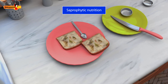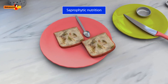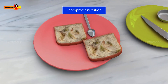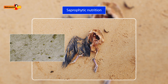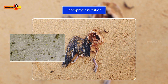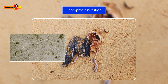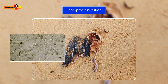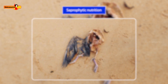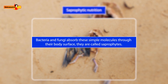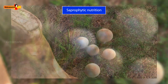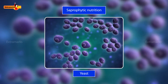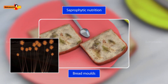Let us now discuss saprophytic nutrition. Sometimes we observe that something of black or blue color is present on bread. This is a type of fungi. Some bacteria and fungi depend on dead organisms to obtain nutrients. They decompose and degrade complex molecules present in these organisms to simple molecules, and absorb these simple molecules through their body surface. They are called saprophytes. Examples of saprophytic organisms include mushrooms, yeast, and bread molds.